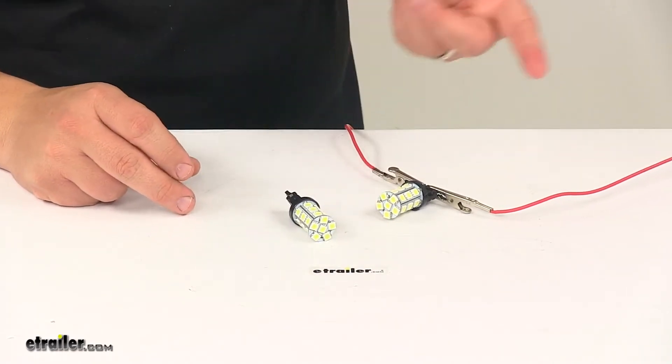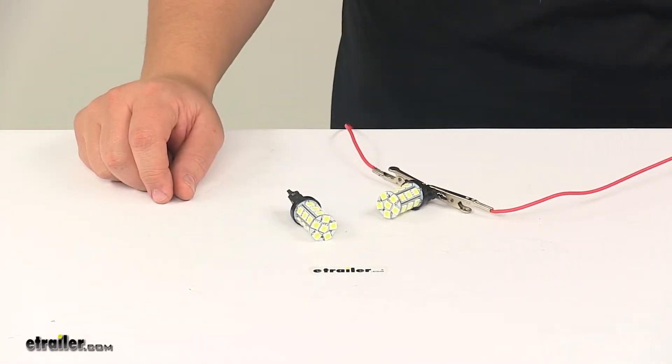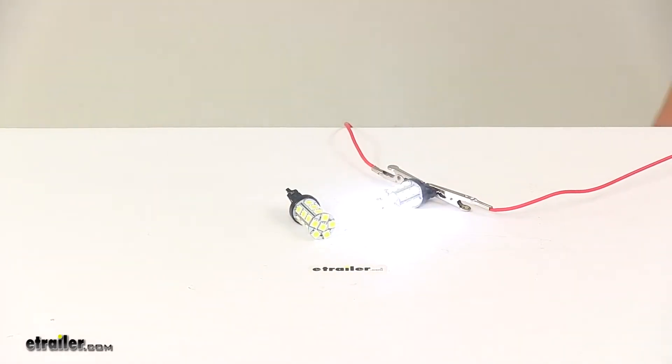We're going to go ahead and turn one of them on. I already have it hooked up to power. We'll also turn off our overhead lights so you can see it in a low light condition.